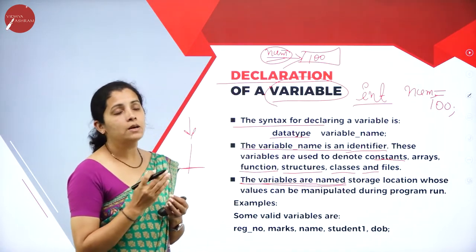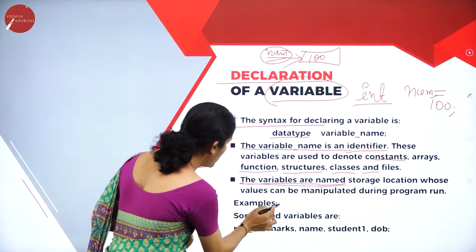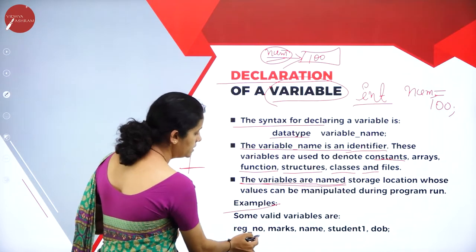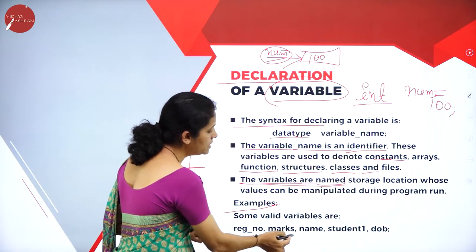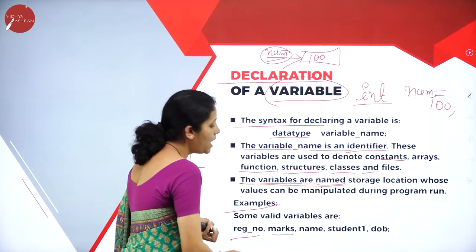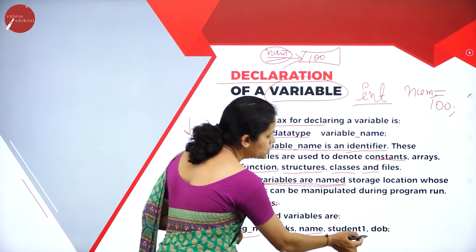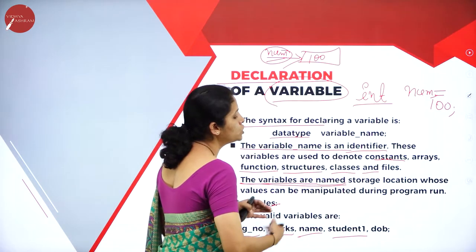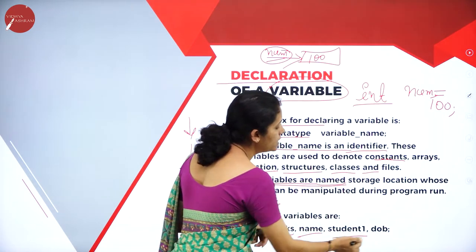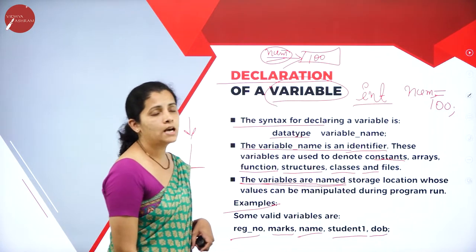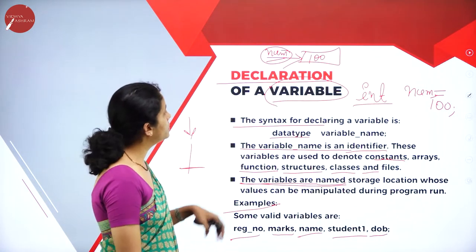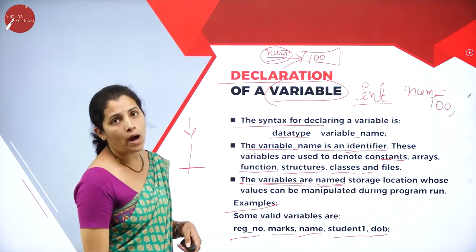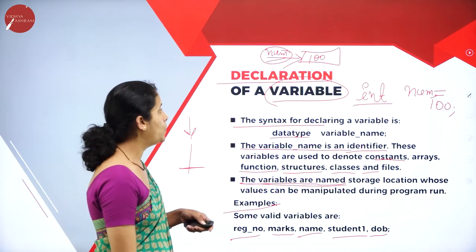The name itself indicates that it is a variable — the value can change randomly, so it is called a variable. Some examples of valid variables are: register number, marks, name, student number, student1, and date of birth. These are some examples of valid variable names.